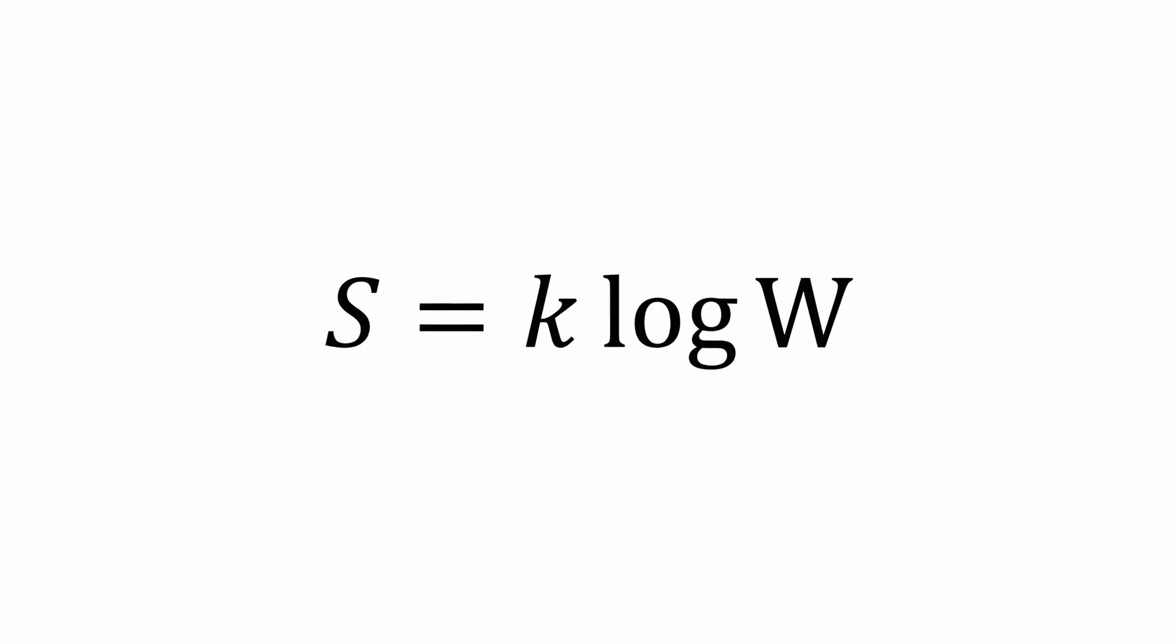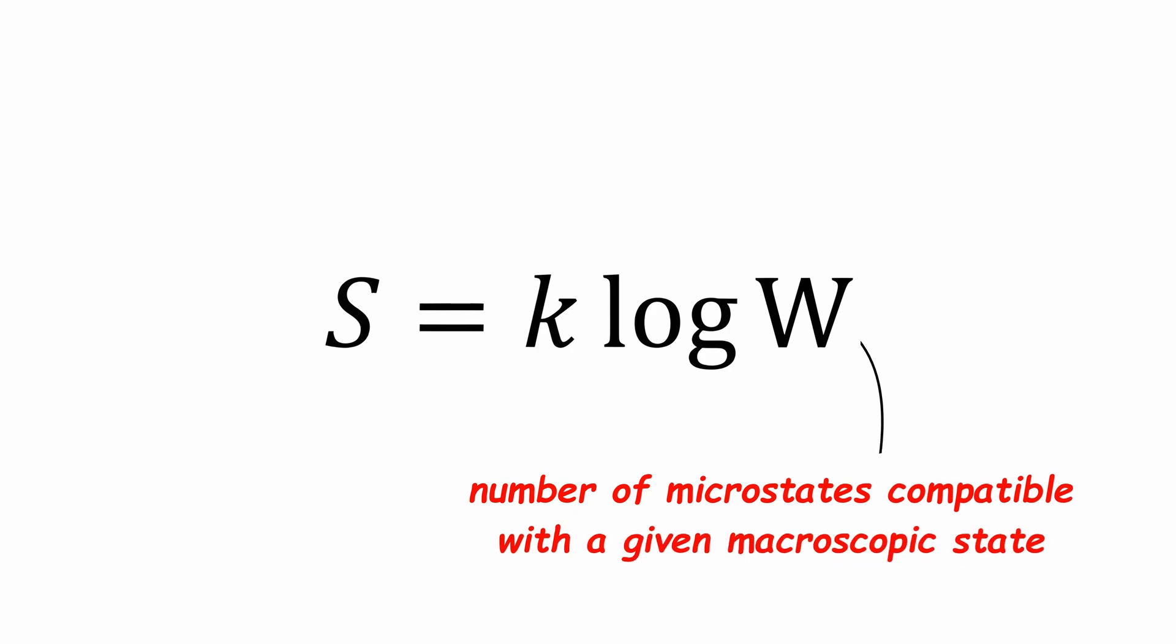Where s represents entropy, k is the Boltzmann constant and w is the number of microstates compatible with a given microscopic state.